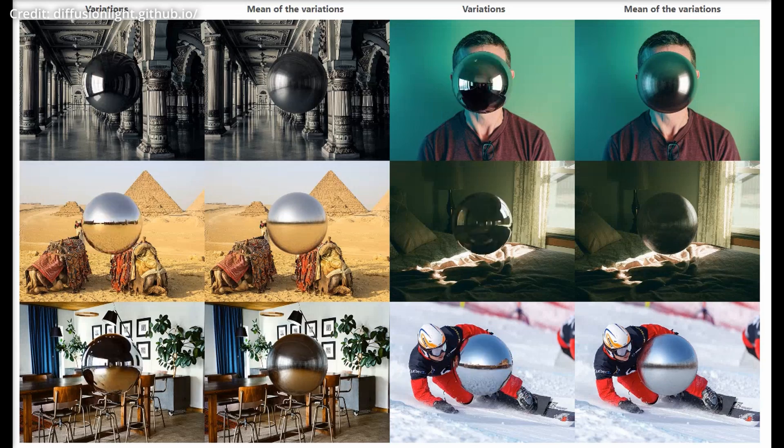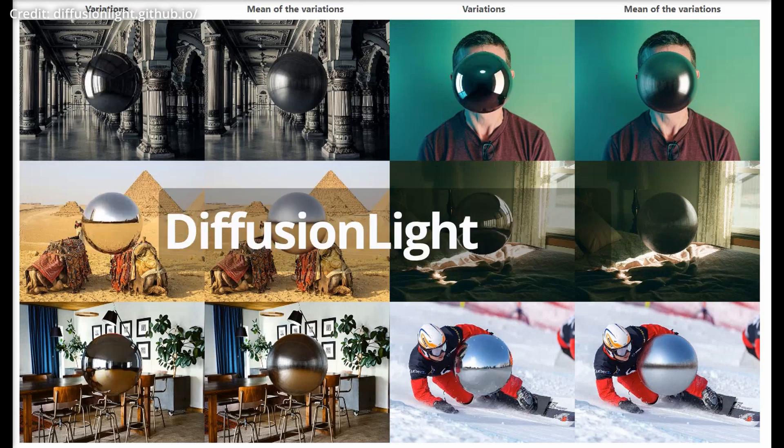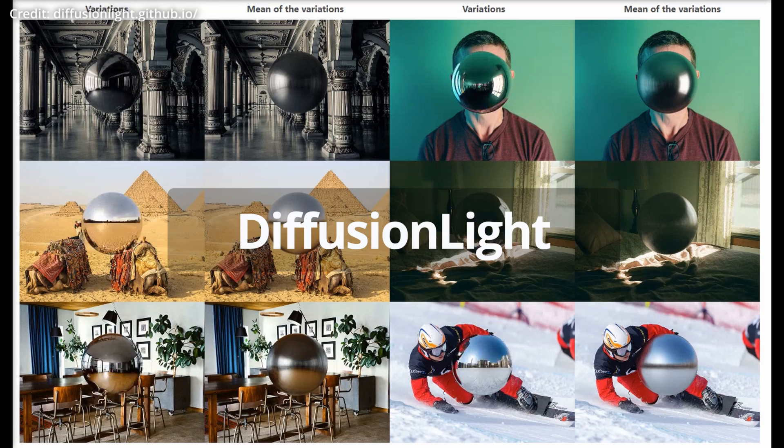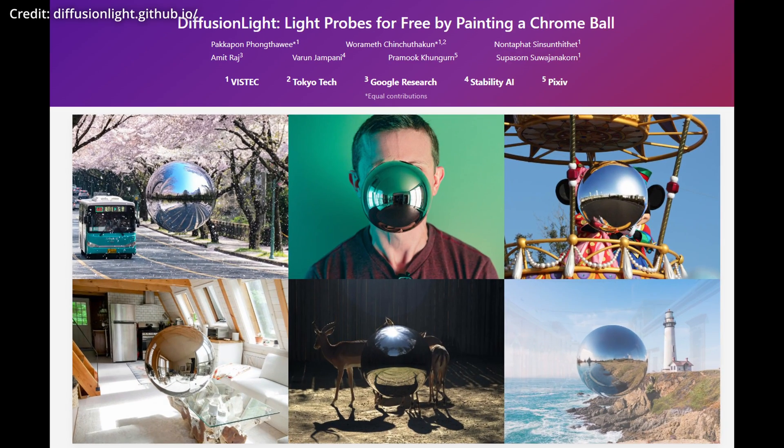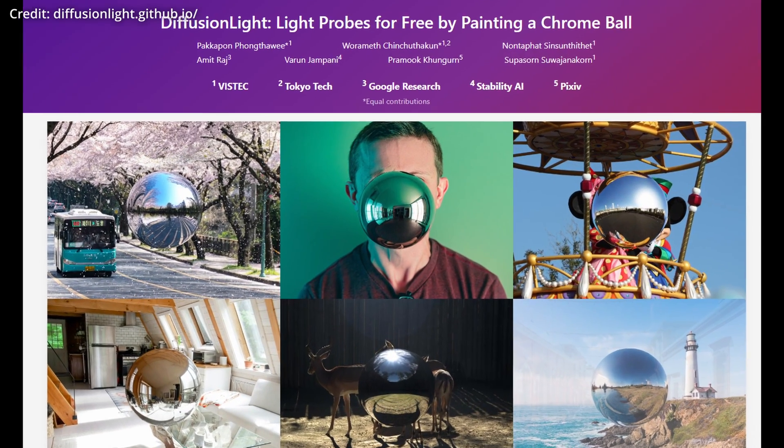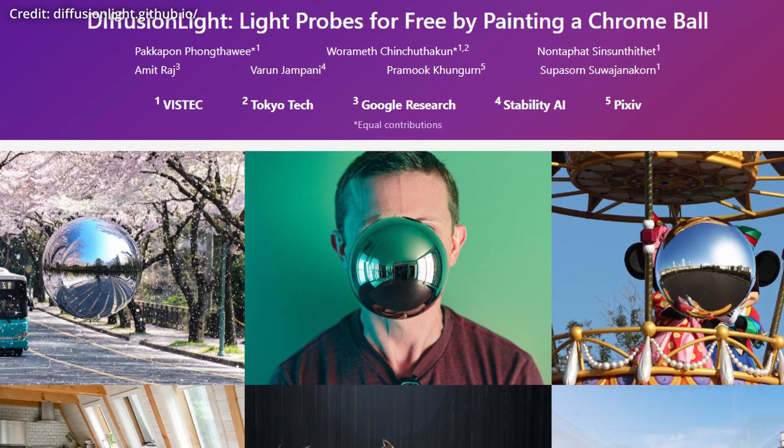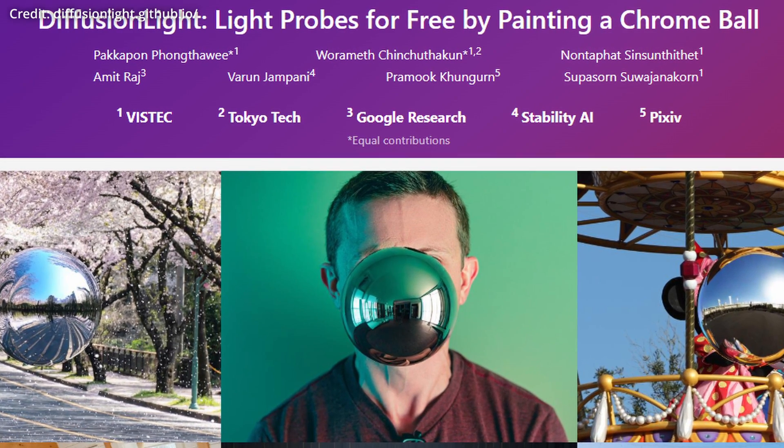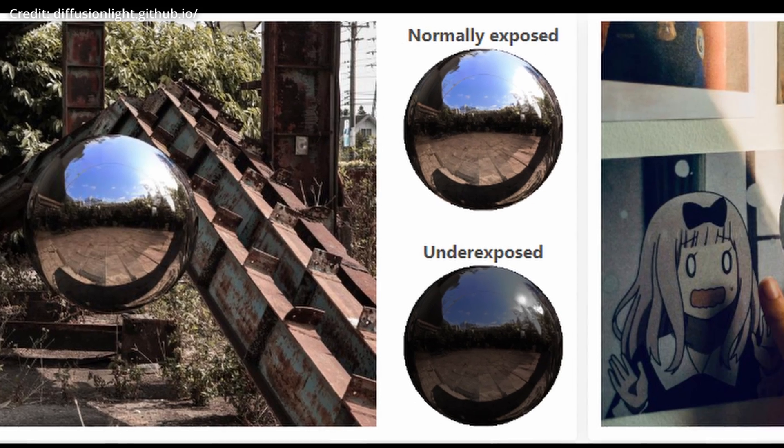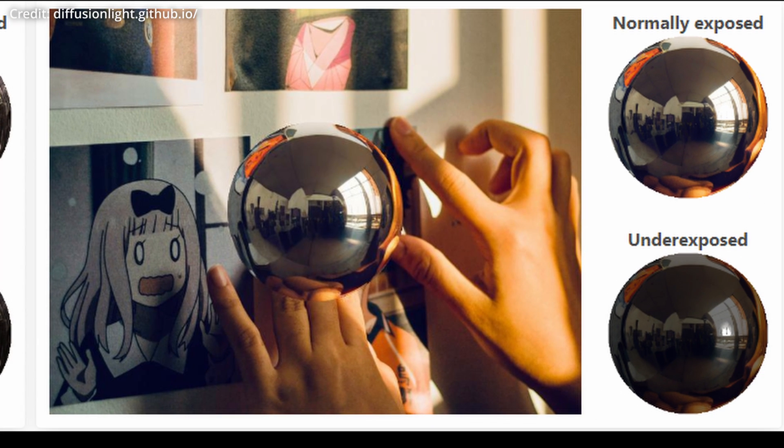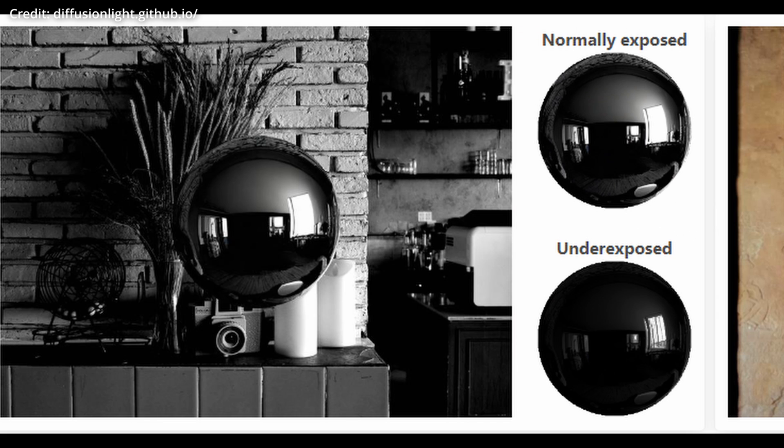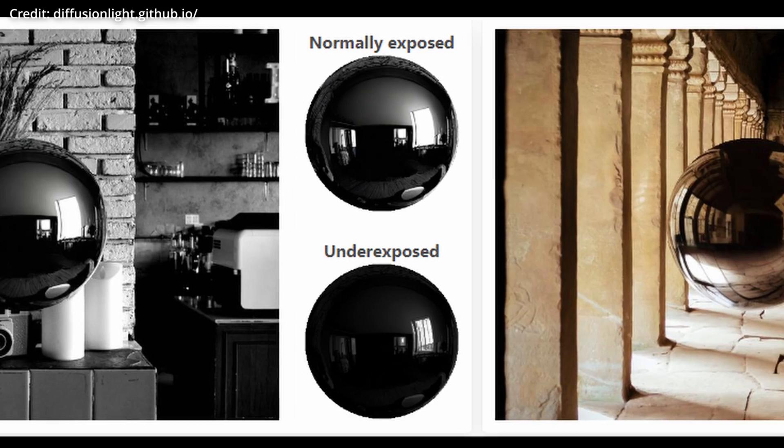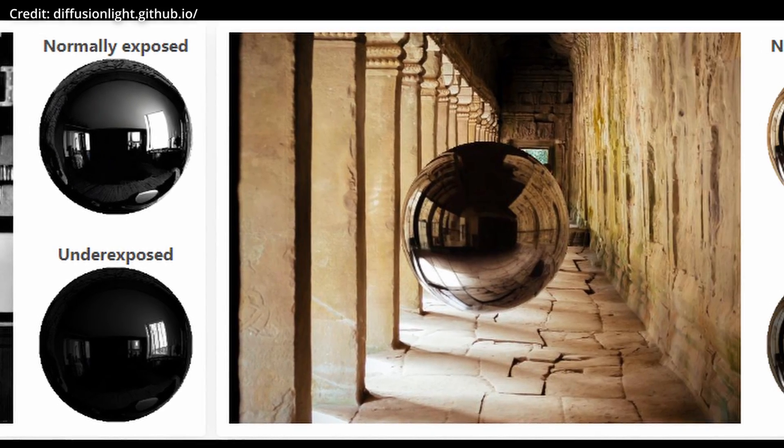Meanwhile, Google, along with partnering AI researchers, has also just unveiled Diffusion Light, a groundbreaking method for lighting estimation in images, employing a novel approach that uses a generated chrome ball as a light probe. This advancement significantly boosts the realism of virtual objects and environments, with potential applications spanning from augmented reality to architecture, gaming, and media production.